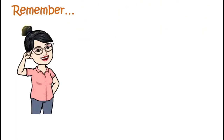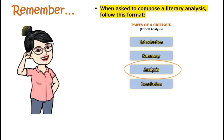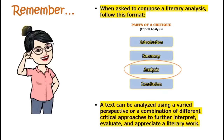Now that we're done, let me give you some reminders. When asked to compose a literary analysis, you have to follow this format: write an introduction and the summary, then write the analysis part using the critical approaches that we discussed, and finally, the conclusion. Now, analyzing a text does not mean that you only have to focus on one literary approach. Kung minsan, we analyze a text using a varied perspective or a combination of different critical approaches to further interpret, evaluate, and appreciate a literary work.